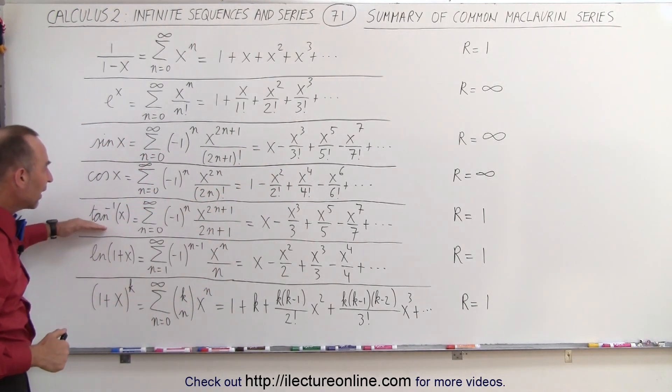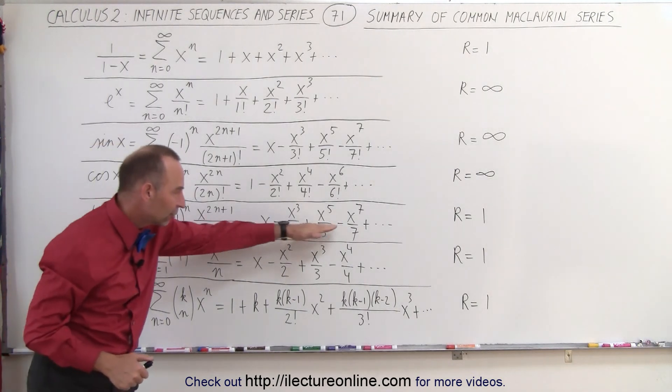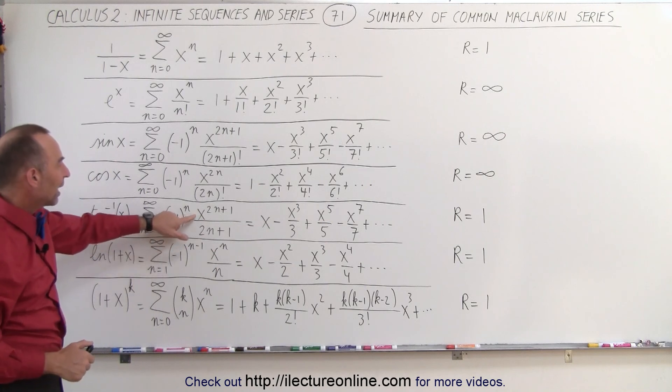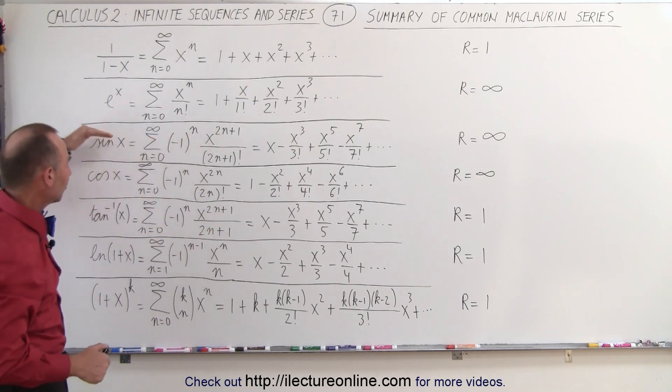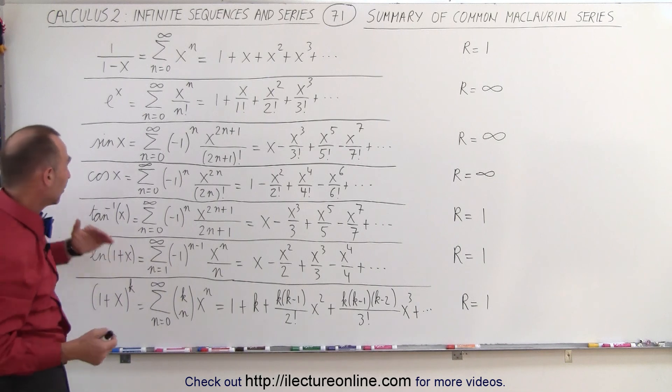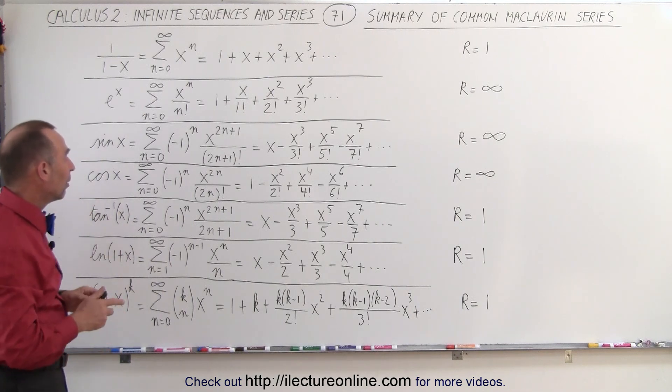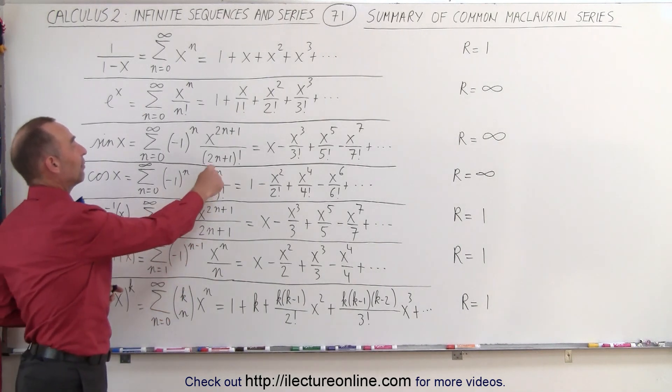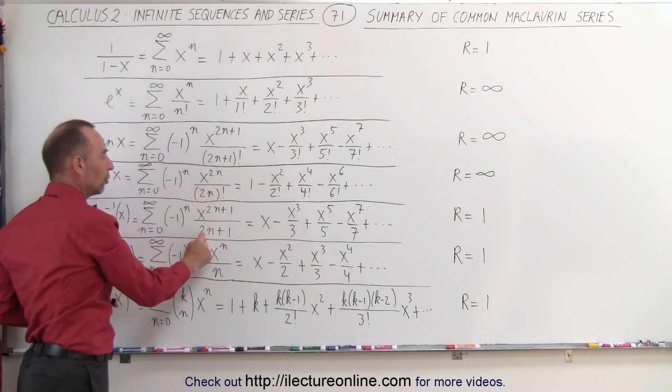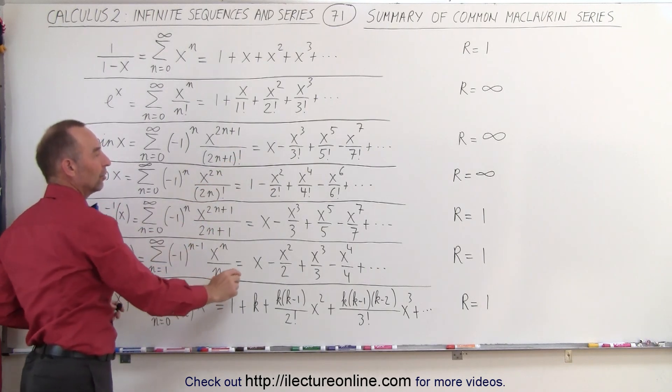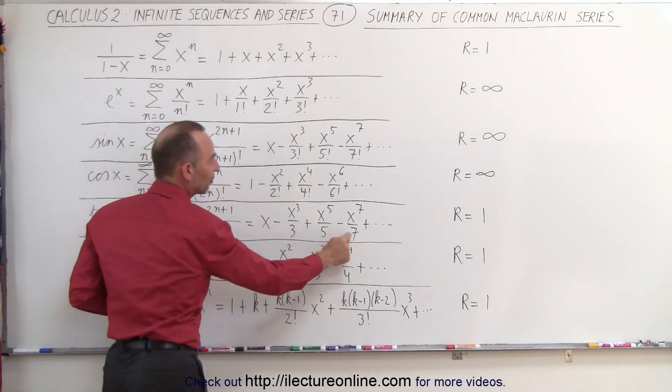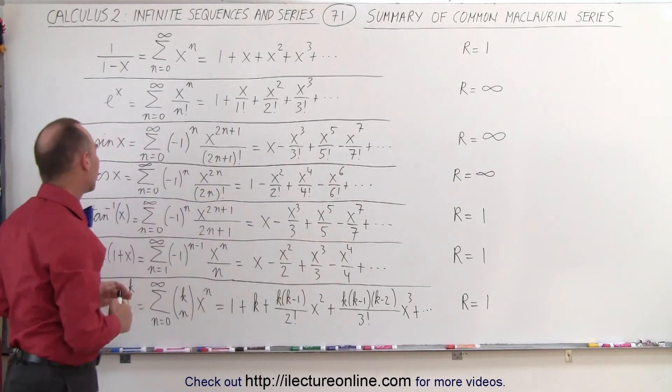For the arctangent of x, notice that we have the minus 1 to the n power, because the signs alternate, but here we have x to the 2n plus 1 in the numerator, which looks just like the sine, and that makes a lot of sense because sine and tangent are very related. But in the denominator, instead of having 2n plus 1 factorial, we simply have 2n plus 1, so you see that the denominator is 3, 5, 7, and so forth.